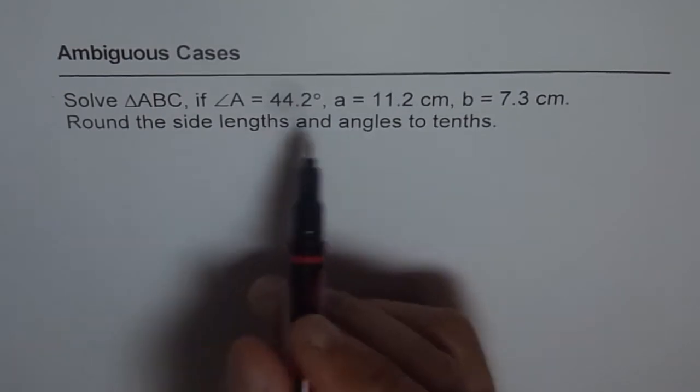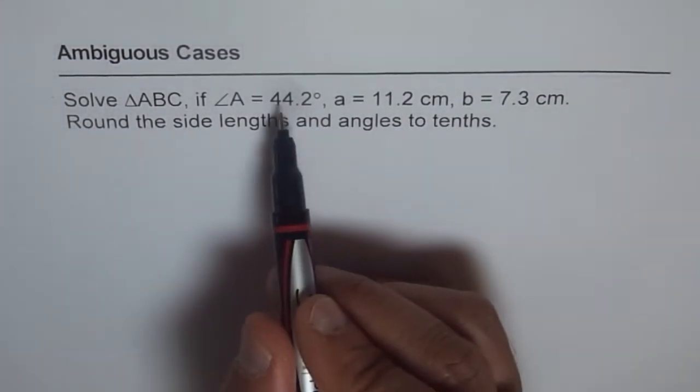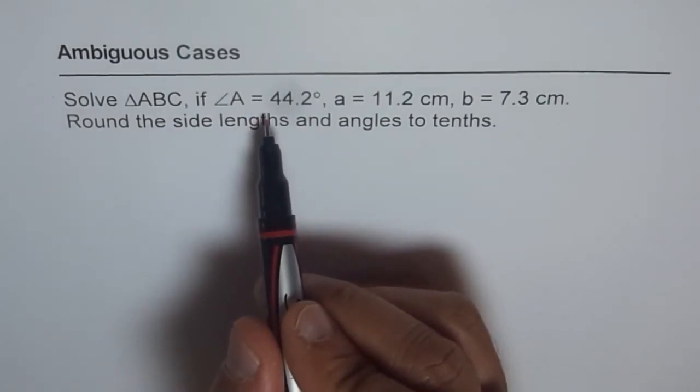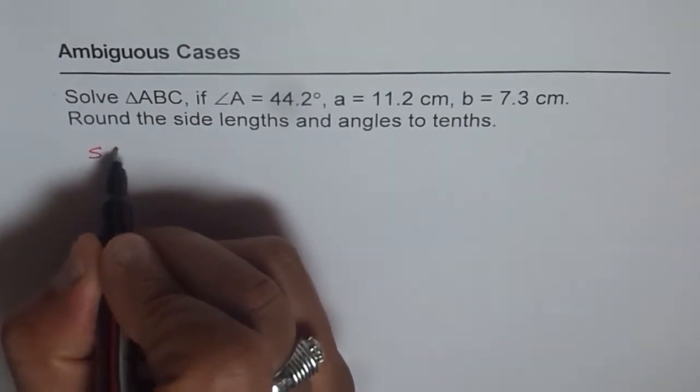So let's see what is given to us. It is given two sides and an angle. The angle given is not the included angle and therefore there is an ambiguous case.